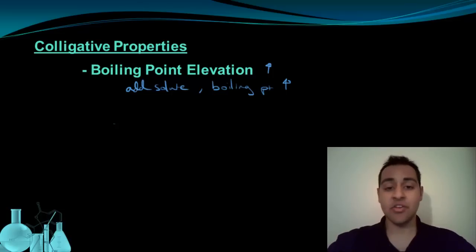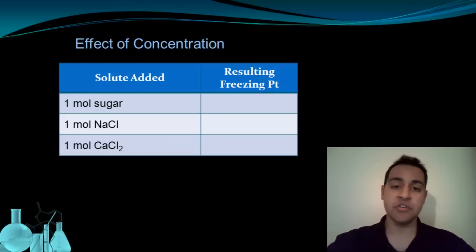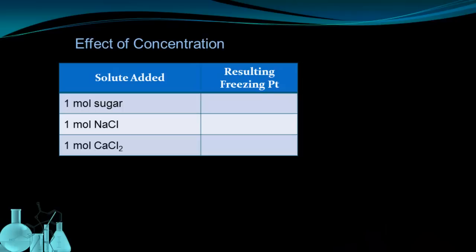Now we've said that adding solute has these effects, these colligative properties. Adding the salt will lower the freezing point, or increase the boiling point. And because these are colligative properties, the degree to which the freezing point is lowered, or the degree to which the boiling point is elevated, is entirely dependent on concentration, or how much solute is added.